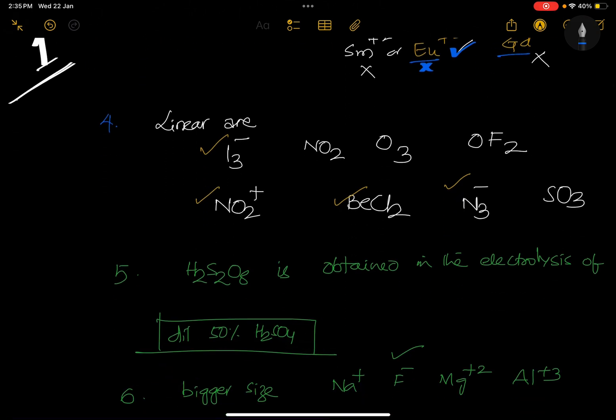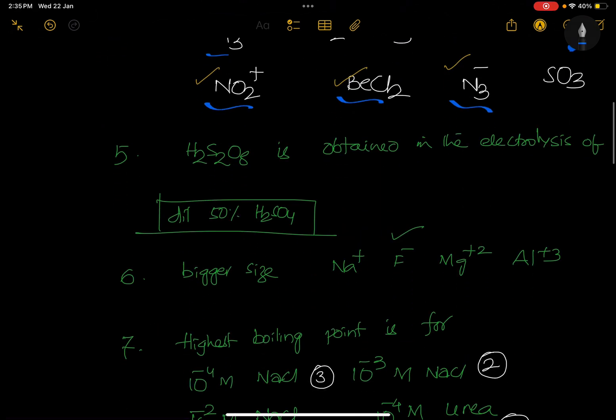Linear molecules are - linear ions are: I3- is linear, NO2+ is linear, BeCl2 is linear, N3- is linear. NO2- bent, O3 bent, OF2 bent. SO3 is trigonal planar, so answer is fourth. Question answer is four.